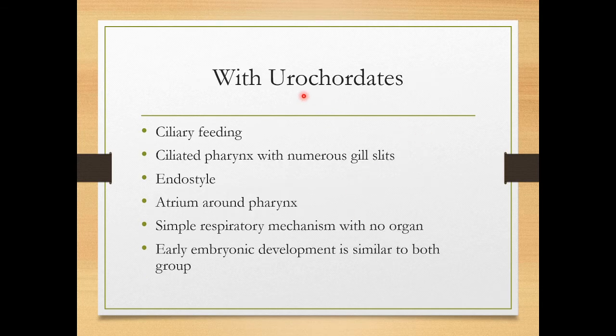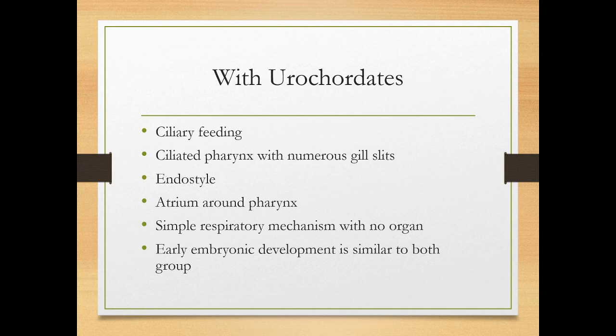Regarding affinities with urochordates: Amphioxus shows ciliary feeding, a perforated pharynx with numerous gill slits, an endostyle resembling the thyroid gland, a hemichordate-like pharynx, and a simple respiratory mechanism with no specialized respiratory organs. Early embryonic development is similar in both urochordates and cephalochordates.